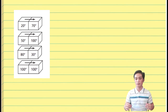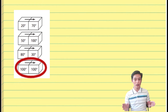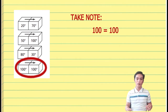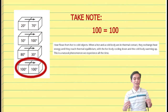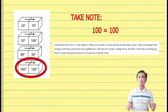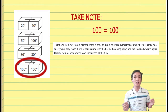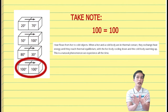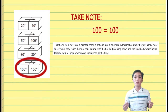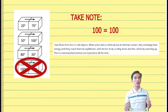Let's also examine the last picture: a 100-degree block giving heat to another 100-degree block. Going back to our definition — when a hot and cold body are in thermal contact, they exchange heat until thermal equilibrium. Thermal equilibrium means both bodies share the same temperature. Once they reach thermal equilibrium, heat will no longer flow. Thus, this last picture is incorrect.